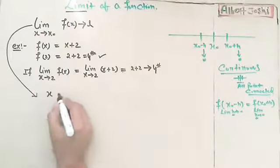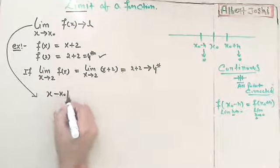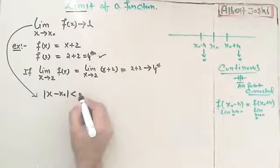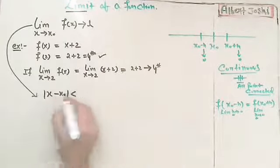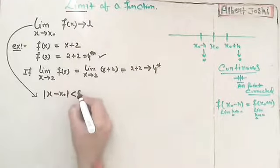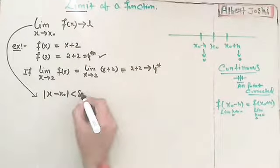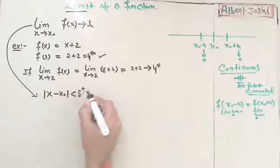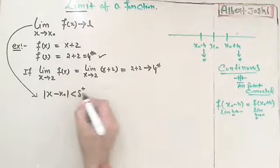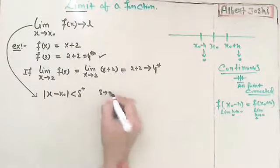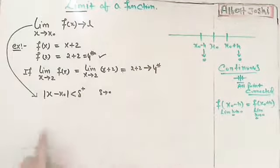It means that there is a difference between this point and this point. This difference means the smallest difference, and that is delta. Delta is a positive value, and it is the smallest value — it is converging to 0.